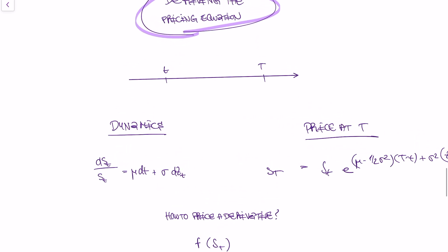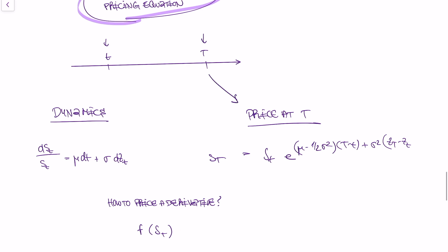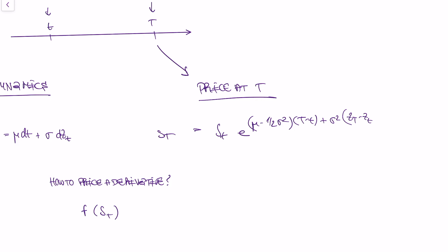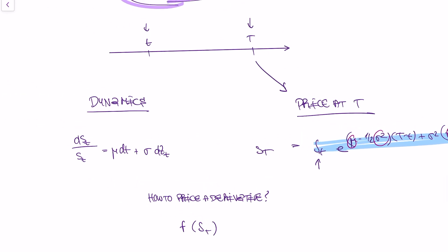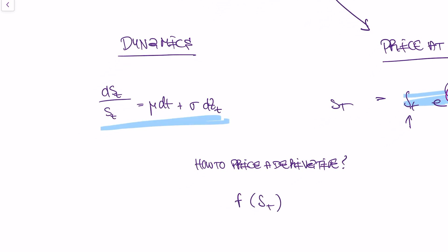Last time, we thought about how the underlying, or any financial asset, evolves from time small t, which is today, to time large T, which is some point in the future. The asset price at time T follows a specific formula dependent on the price today (S small t), the return of the asset, the variance, and Brownian motion. We also talked about the dynamics of the asset — how the price changes when time only changes by a little bit. The change in the asset is given by the return scaled by the change in time, plus the variance scaled by a change in Brownian motion.